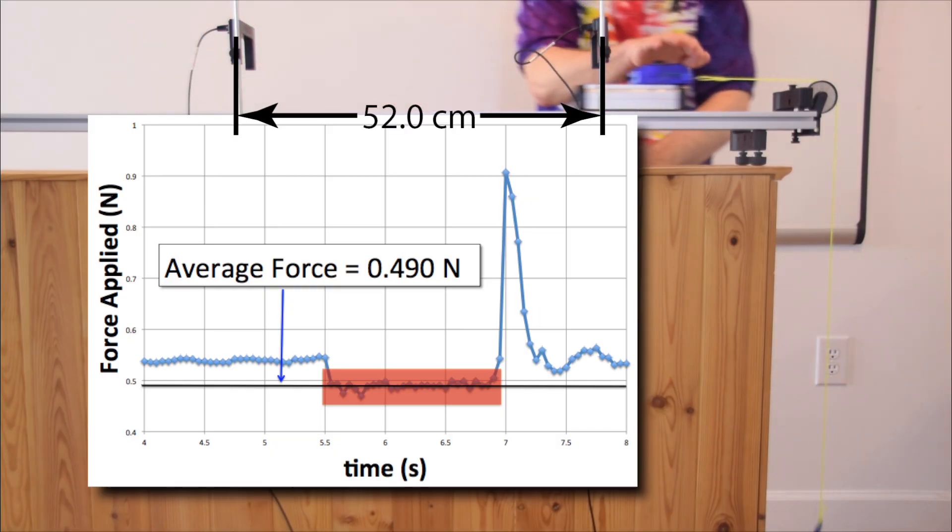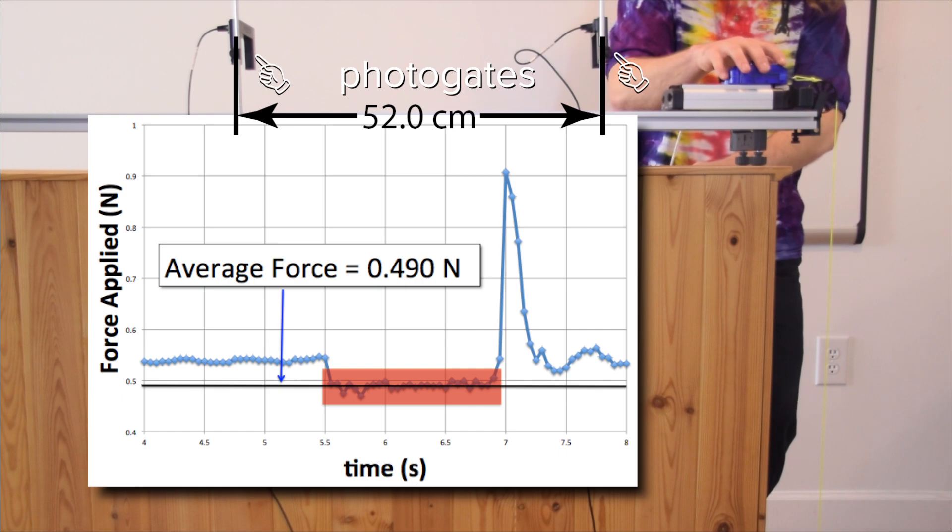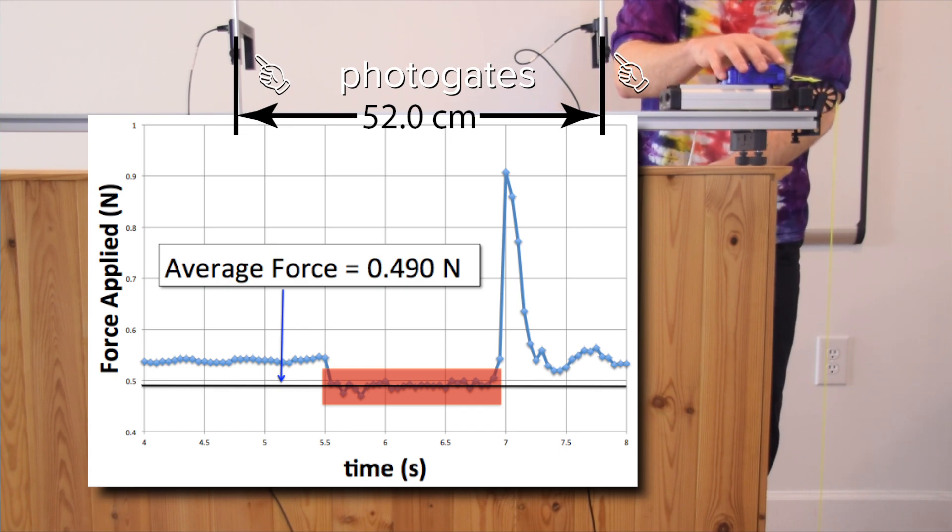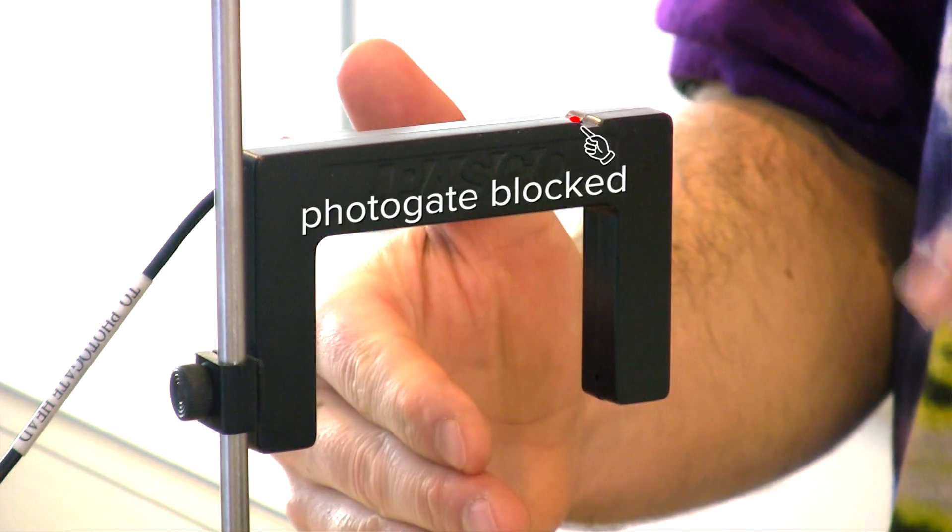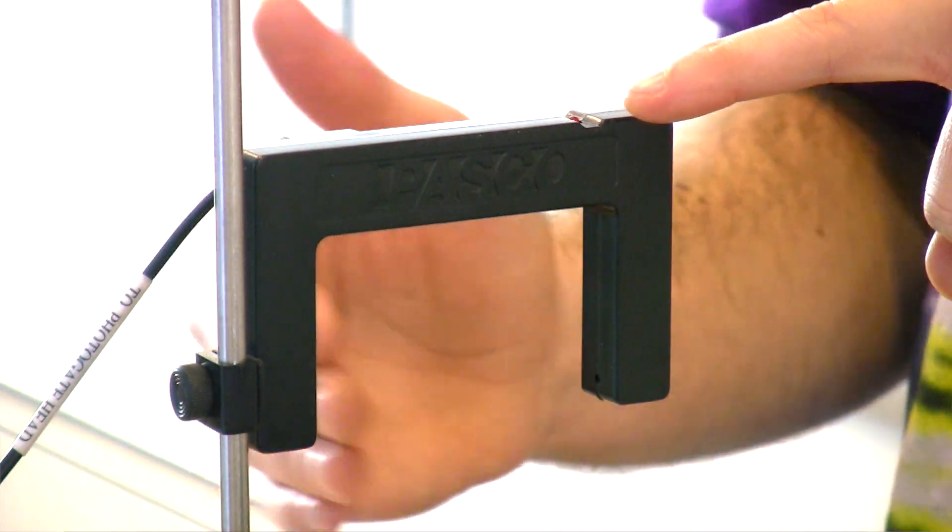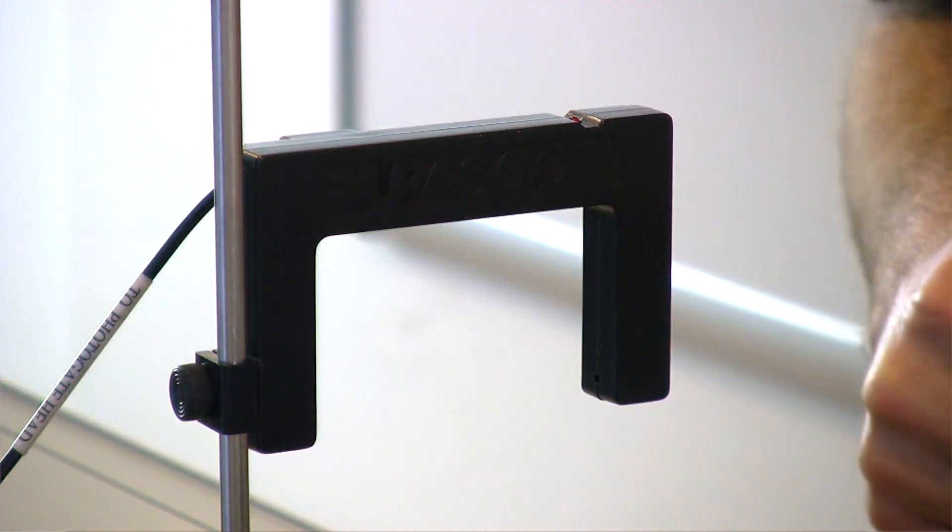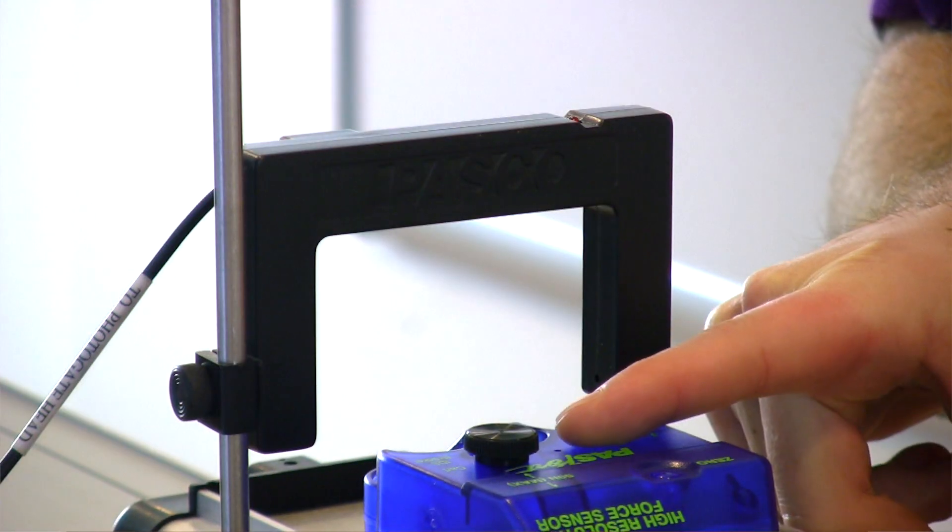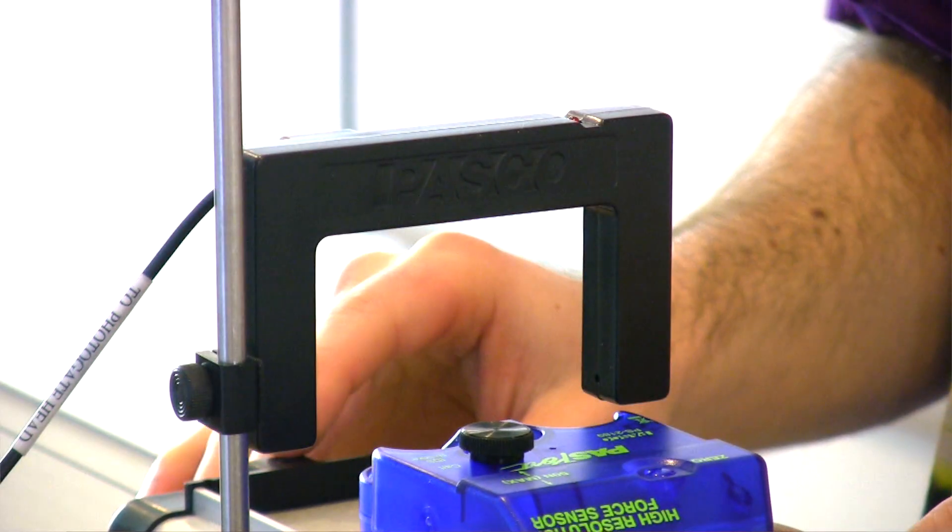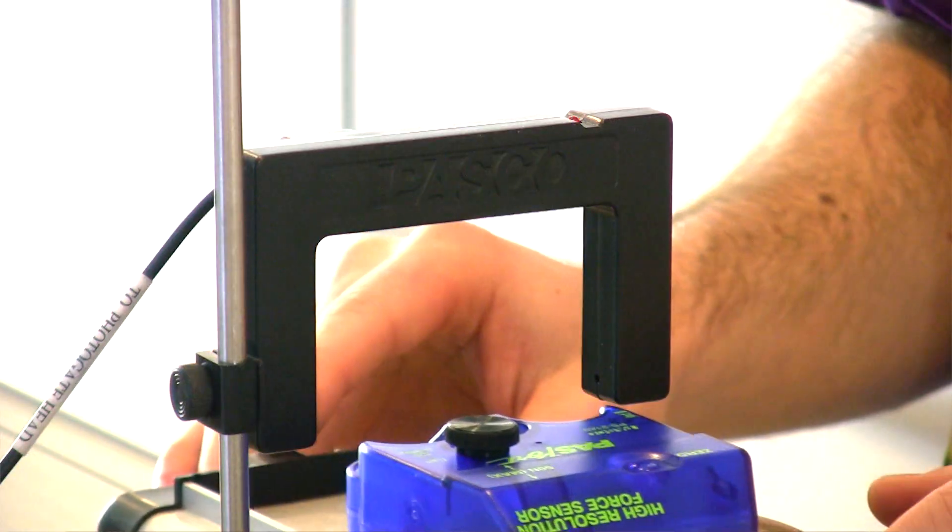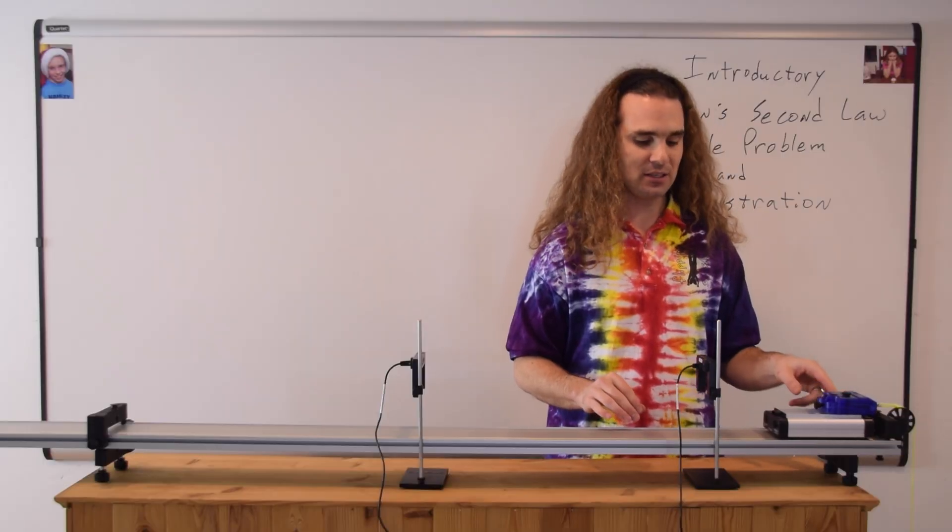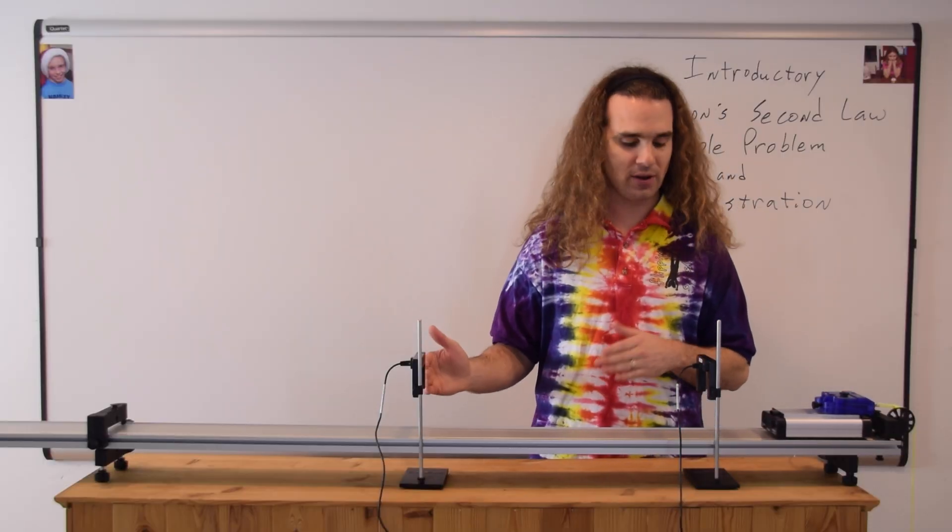In addition to that, I have these two photogates placed 52.0 centimeters apart. A photogate measures when something opaque blocks the photogate, and you can see that when my hand is inside the photogate, this light goes on. I've set it up such that this knob on the photogate sensor, when that is going through the photogate, it will trip the photogate sensor. That way, we can measure the time it takes for the cart to go from one photogate to the next.